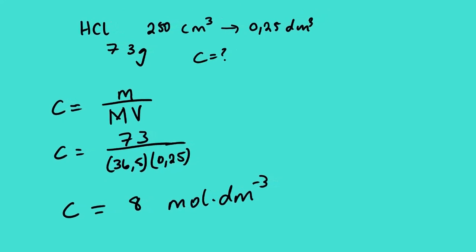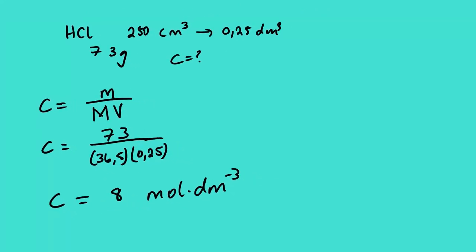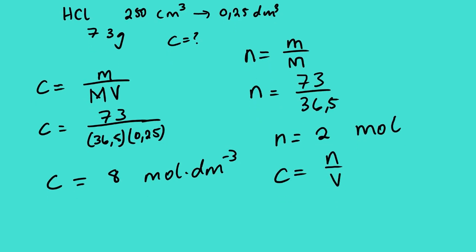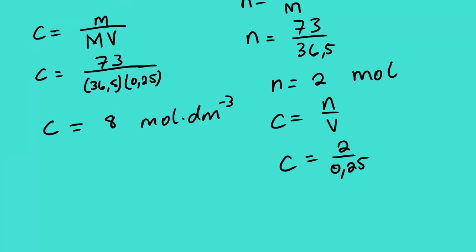There is another method whereby we can first calculate the number of moles. n = m/M, so n = 73 over 36.5, giving n = 2 mol. From there, C = n/V = 2 over 0.25, so C equals 8 mol per dm³.